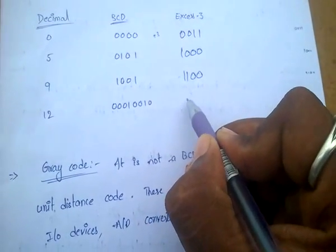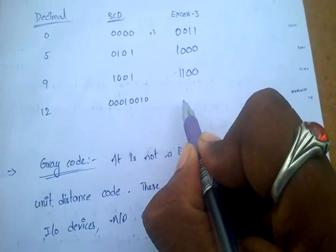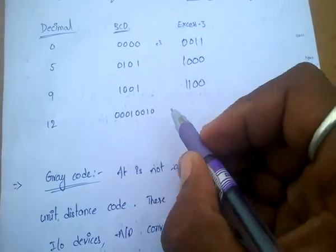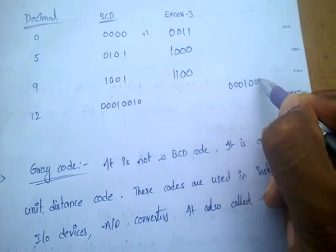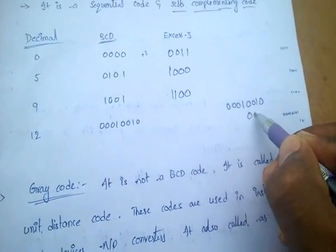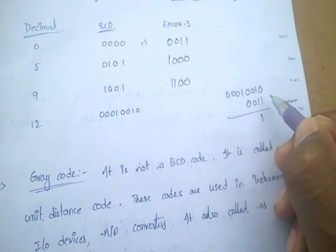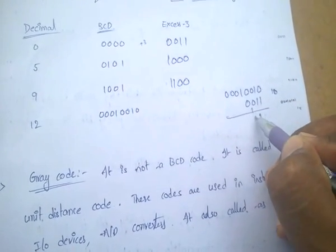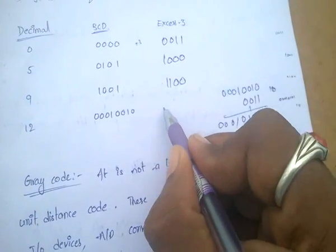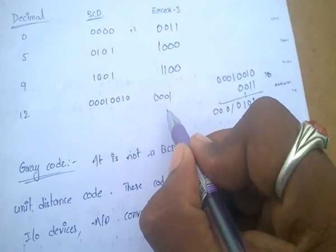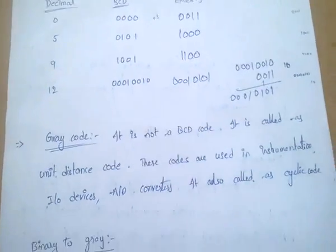For 12, it is 12 plus 3 equals 15. For 15, add 3 — that means 0010 added, giving 1 1 means 2, that is 10100 0. So the result is 00010101. This is the XS3 code.